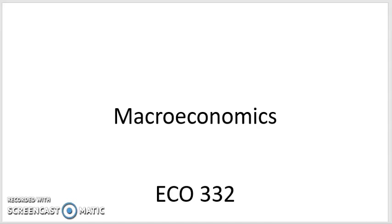The last part, Unit 4, will cover chapter 25. Chapter 25 looks at the evolution of macroeconomic thought, which basically examines the different models and theories in macroeconomics and how they have evolved over time.